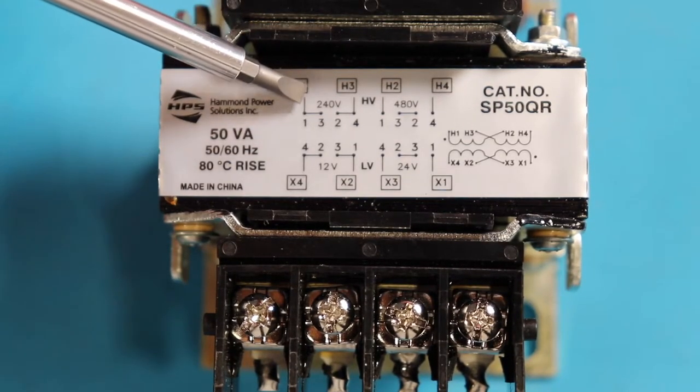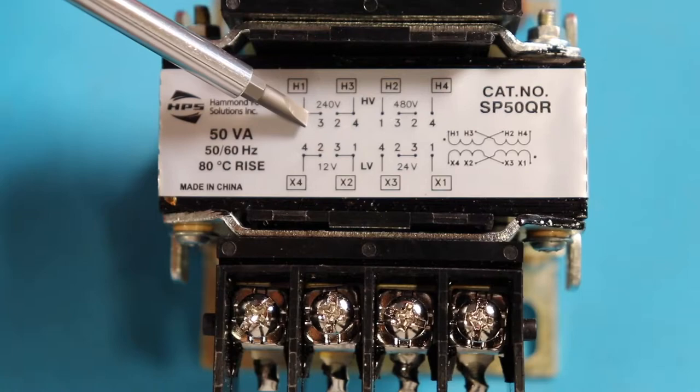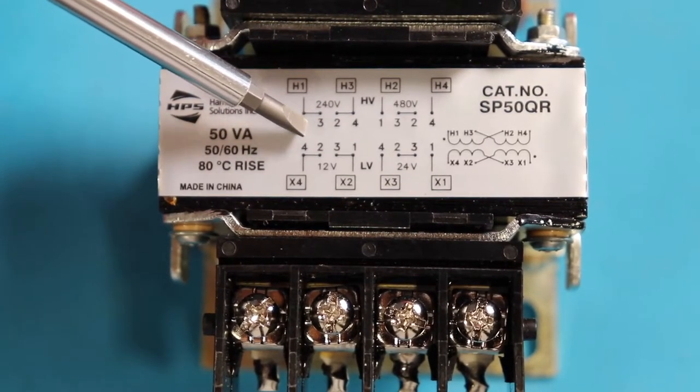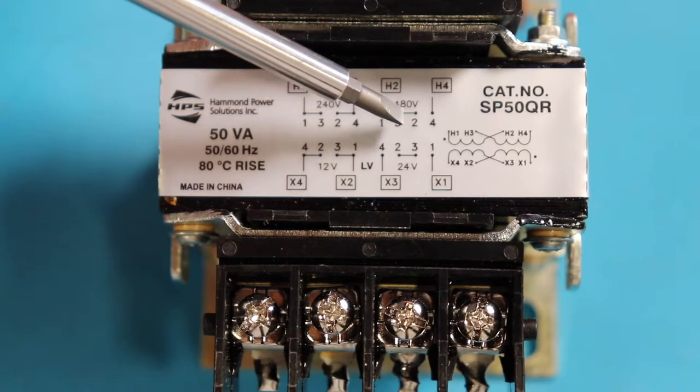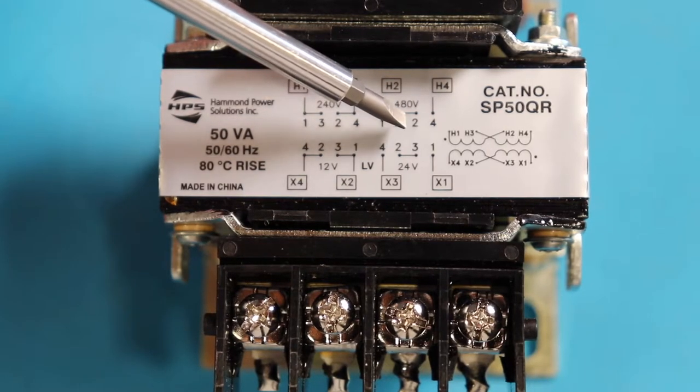Now to achieve 240 volts, we got to add jumpers in here. These lines indicate jumpers, 1 and 3 and 2 and 4. If we want to do 480 volts, we got to insert a jumper between 3 and 2.